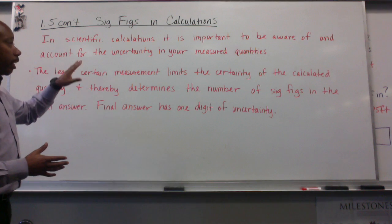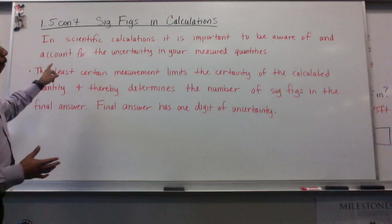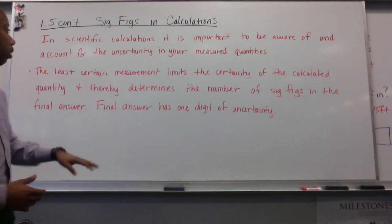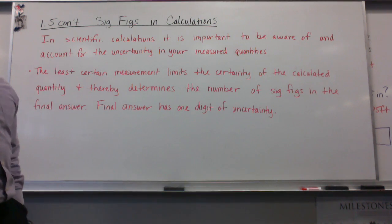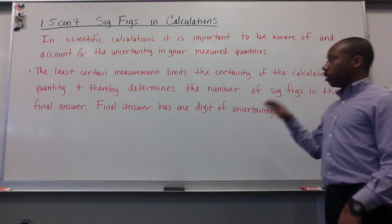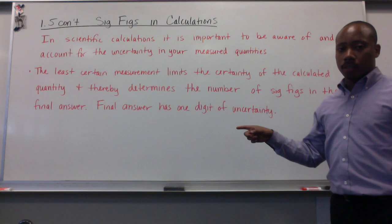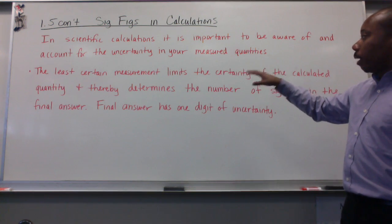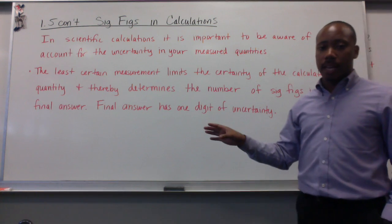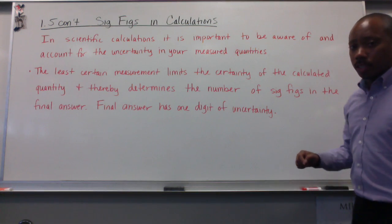Now, in scientific calculations, it is important to be aware of and account for the uncertainty in your measured quantities. The least certain measurement limits the certainty of the calculated quantity and thereby determines the number of significant figures in that final answer. Your final answer has one digit of uncertainty.